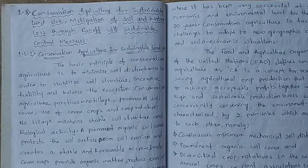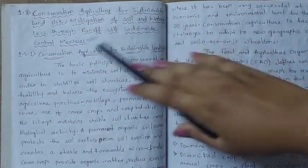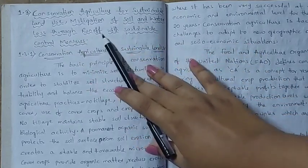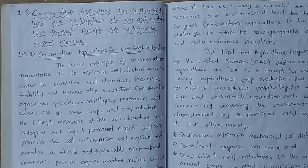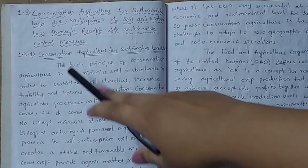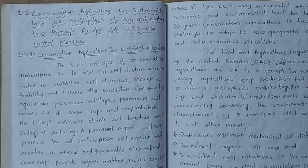Coming to today's topic, which is conservation agriculture for sustainable land use, and mitigation of soil and water loss through runoff with sustainable control measures. We will look at how we can use land sustainably and what control measures we can use for soil and water loss. This is topic 1.3, and the first part is conservation agriculture for sustainable land use.